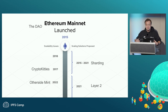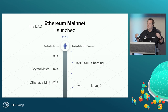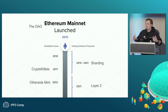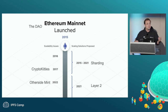Then in 2017, CryptoKitties launched — a cat breeding game. It ended up having a significant number of users and ate up a significant amount of Ethereum block space. There was a lot of frustration; people launching ICOs at the time had to delay them because of how much block space CryptoKitties was consuming.